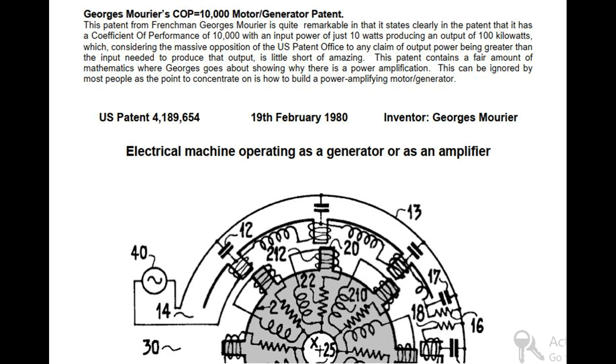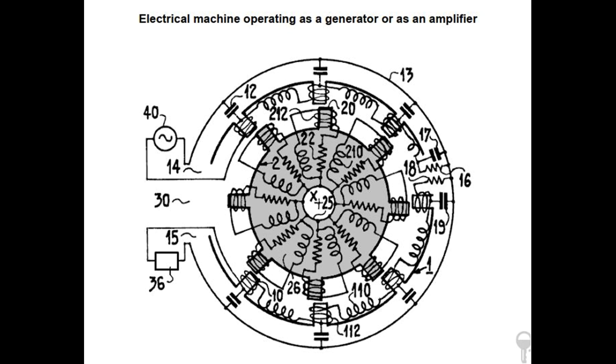U.S. Patent 4,189,654, February 19, 1980. Inventor: George Mourier. Electrical machine operating as a generator or as an amplifier.